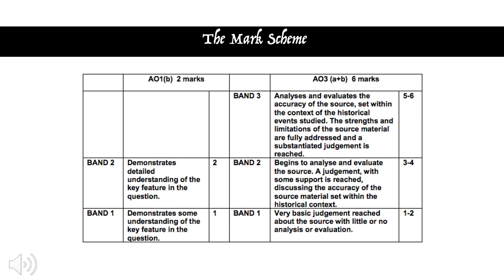Finally, we need to come to a substantiated judgment. That just means not only have you talked through the source, brought in your own knowledge, and analysed the author — you've then come to a judgment that links to what you've said. There's no point saying the source is really weak all the way through and then concluding it's accurate. That's unsubstantiated. To substantiate something is to back it up with evidence.